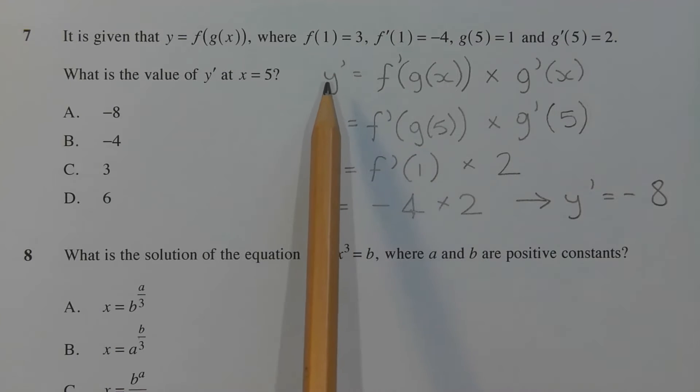So applying the chain rule, we get y dash is equal to f dash of g of x times g dash of x. Now we're interested in the value of the derivative y dash at the point where x equals 5. So substituting 5 for x, we get y dash is equal to f dash of g of 5 times g dash of 5.